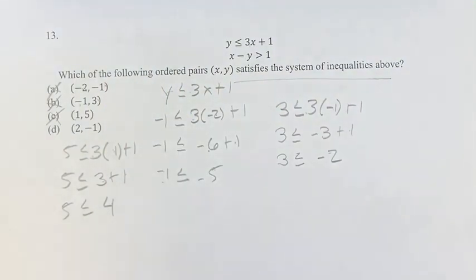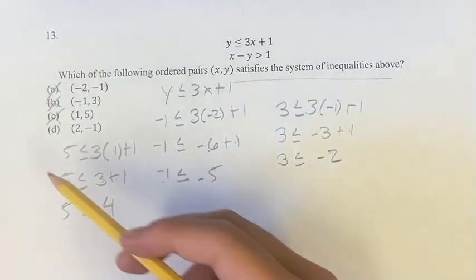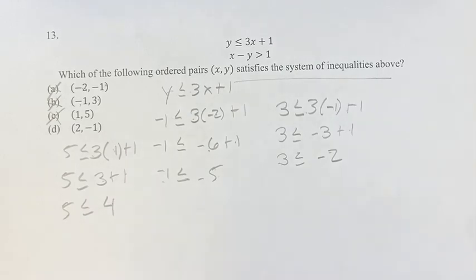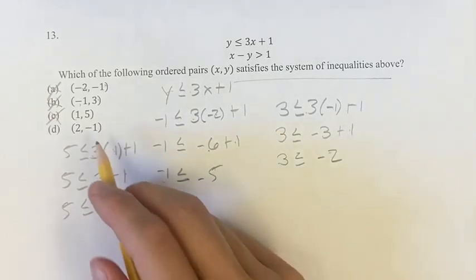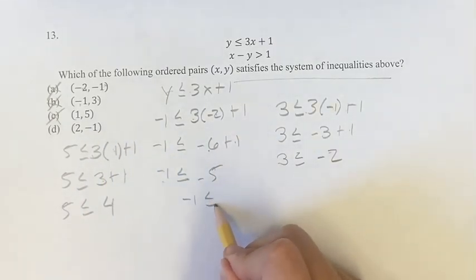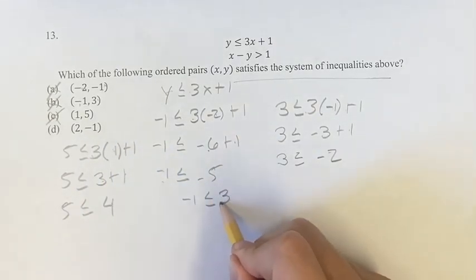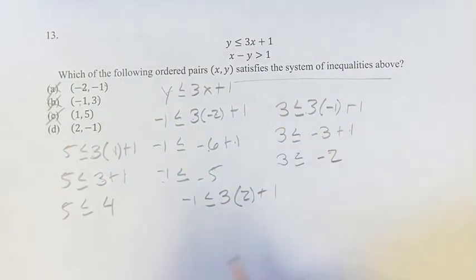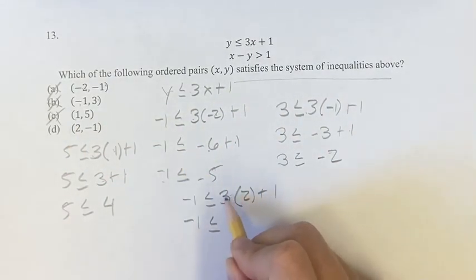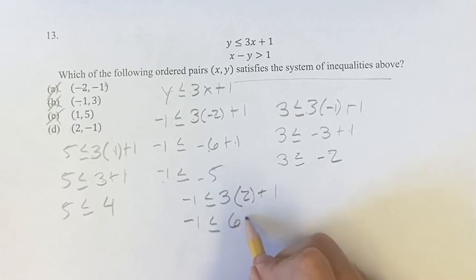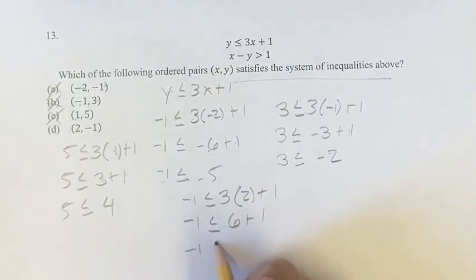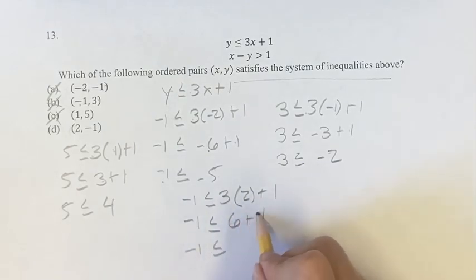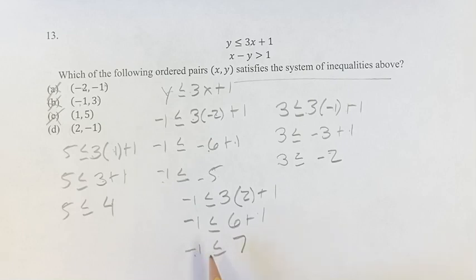Now by process of elimination, we know D must be the answer, but let's test it. Y = -1 ≤ 3(2) + 1. Negative 1 ≤ 6 + 1, which gives us -1 ≤ 7. Negative 1 is less than or equal to 7, so this does satisfy the first inequality.